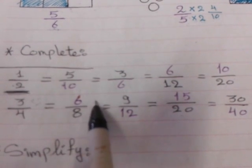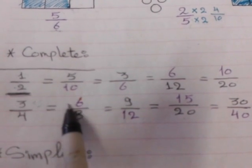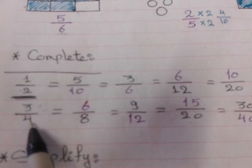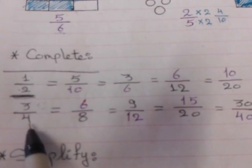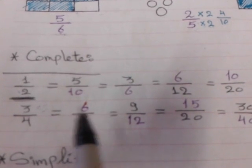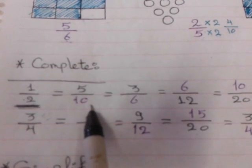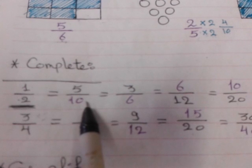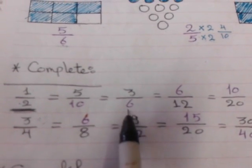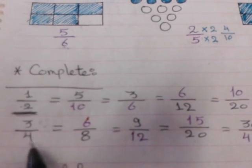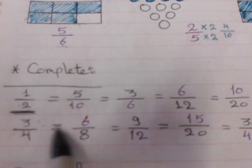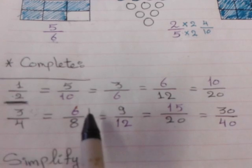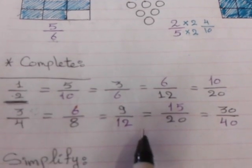3 quarters equals something over 8. Which number makes it an equivalent fraction to 3 quarters? 4 becomes 8 — multiply by 2, so 3 multiplied by 2 equals 6. Next, 3 becomes 9 — multiply by 3, so 4 multiplied by 3 equals 12. Then 4 becomes 20 — multiply by 5, so 3 multiplied by 5 equals 15. Finally, 3 becomes 30 — multiply by 10, so 4 multiplied by 10 equals 40.